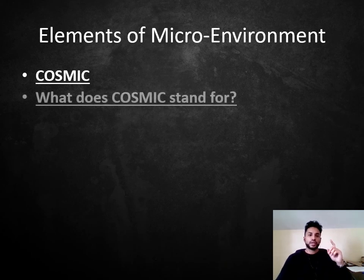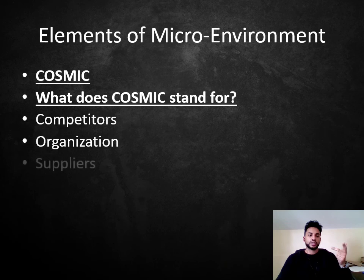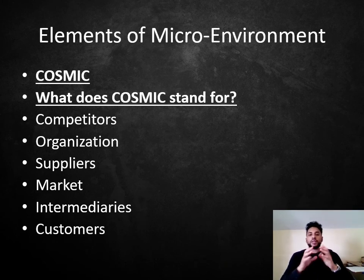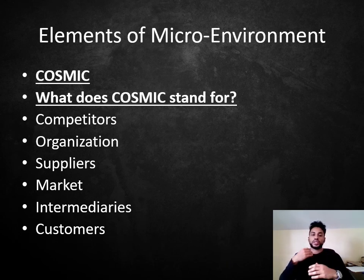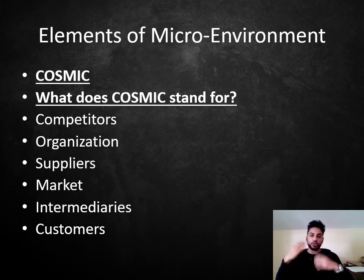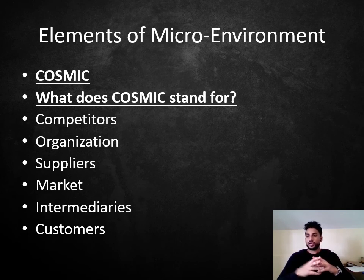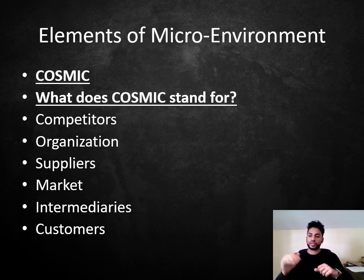COSMIC stands for: Competitors, Organization, Suppliers, Market, Intermediaries, and Customers. Competitors directly affect a company — for example, if you're selling water bottles and a competitor starts selling the same type of water for half the price, that will directly affect you. That's part of the micro environment. Organization refers to what's going on within your own business.